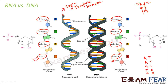We will discuss complementary base pairing in the next slide. In this slide, the aim was to explain the difference between RNA and DNA as far as their structure is concerned. Understanding this chemical structure is very important because without it you will not be able to understand the concepts of how DNA helps in inheritance.